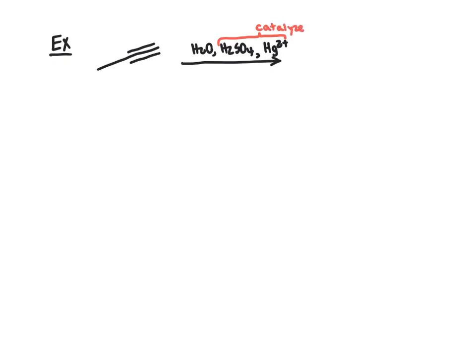The reaction mechanism for this reaction is rather similar to the mechanism of alkenes undergoing acid-catalyzed hydration reactions, so we're not going to look at the mechanism in detail. We're going to look at the final product, keeping in mind that just like the acid-catalyzed hydration of alkenes, this reaction does follow Markovnikov's rule, so it is a regioselective reaction. We'll add H and OH across the carbon-carbon triple bond, leaving us with a carbon-carbon double bond where we've added H to one carbon and OH to the other.